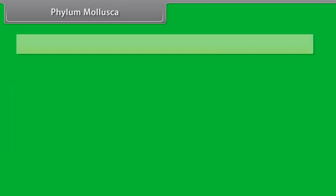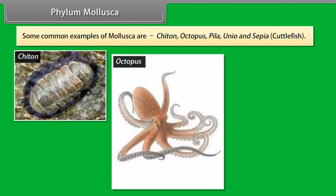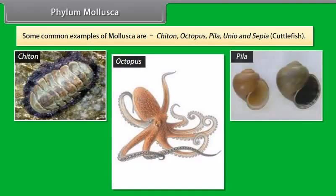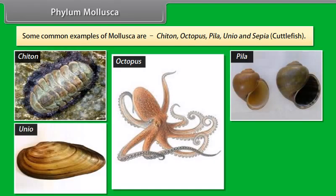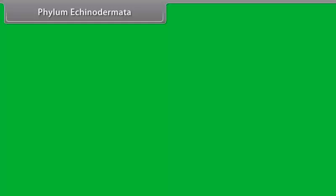Some common examples of Mollusca are Chiton, Octopus, Pila, Unio, and Sepia (Cuttlefish).